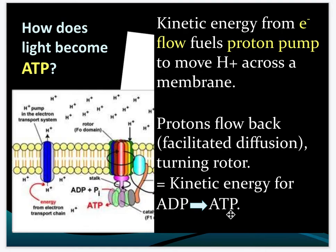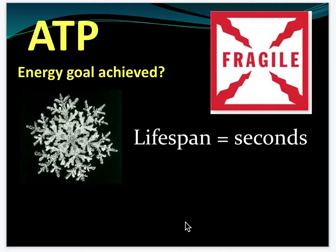So how does light become ATP? The kinetic energy from all of these electrons fuels the electron transport chain, which fuels the energy to turn ADP into ATP. The problem with ATP is that it has the shortest lifespan of most molecules — it only lasts a few seconds.